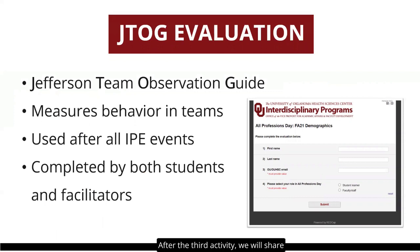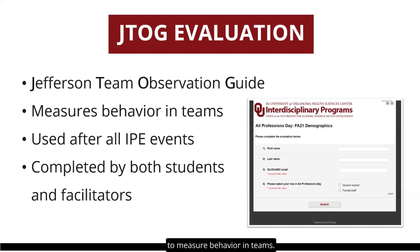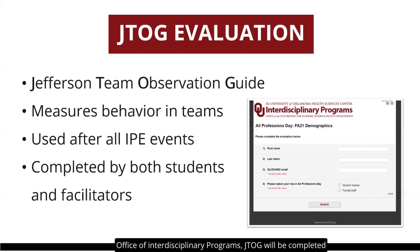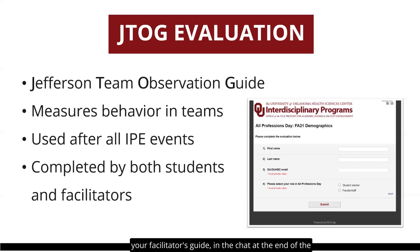After the third activity, we will share the final video and everyone will be asked to complete the JTAG assessment. JTAG stands for the Jefferson Team Observation Guide — a national evaluation used to measure behavior in teams. As part of the evaluation plan of the Office of Interdisciplinary Programs, JTAG will be completed after every IPE event, including simulations and clinic. It is important that both students and facilitators complete the assessment. The link to JTAG can be found at the end of your facilitator's guide, in the chat at the end of the session, and via QR code during the final video.